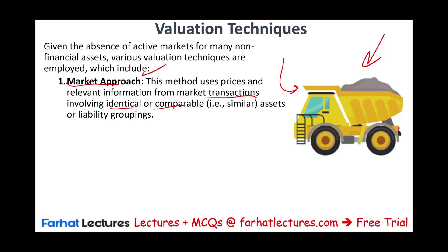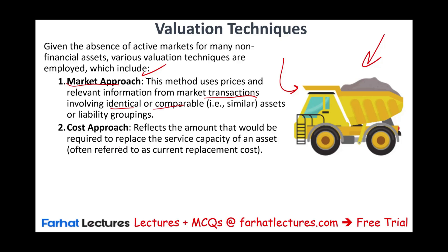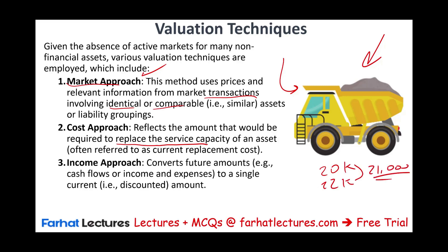What if this truck is already used? We can apply the cost approach, which reflects the amount required to replace the service capacity of the asset — called the replacement cost. For example, if we find two replacement cost estimates of $20,000 and $22,000, we might use $21,000 as the fair value. Alternatively, we can use the income approach, which looks at the future cash flows this truck is generating and discounts them to the present. We convert future cash flow amounts to a single current discounted value, and that becomes the fair value of the truck.